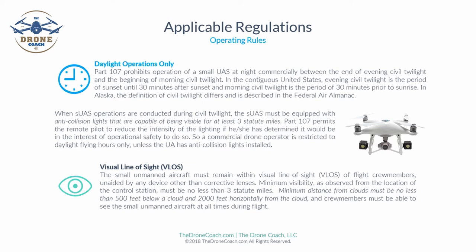Part 107 prohibits commercial operation of a small UAS at night — between the end of evening civil twilight and the beginning of morning civil twilight. In the contiguous United States, evening civil twilight is the period from sunset until 30 minutes after sunset, and morning civil twilight is 30 minutes prior to sunrise. In Alaska the definition differs and is described in the Federal Air Almanac. When SUAS operations are conducted during civil twilight, the aircraft must be equipped with anti-collision lights visible for at least three statute miles.